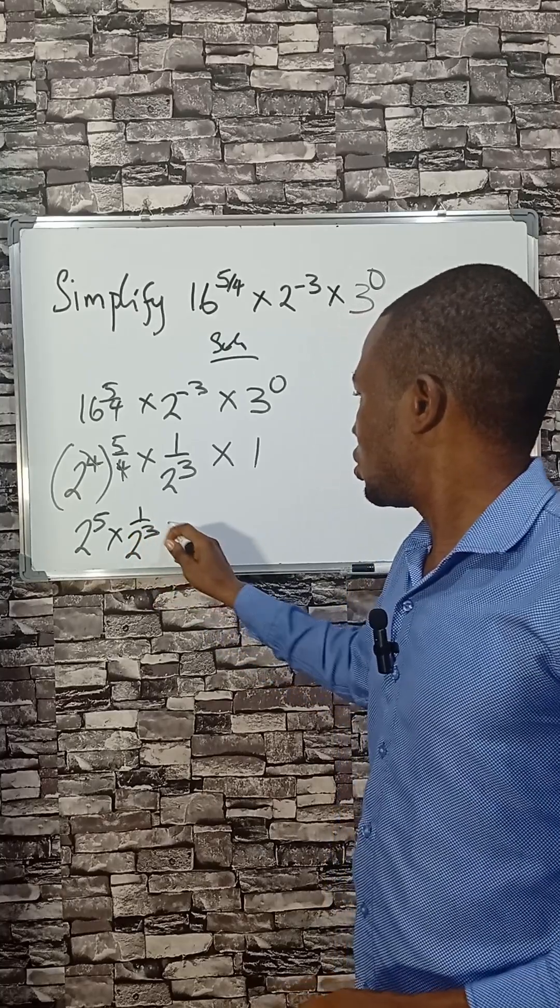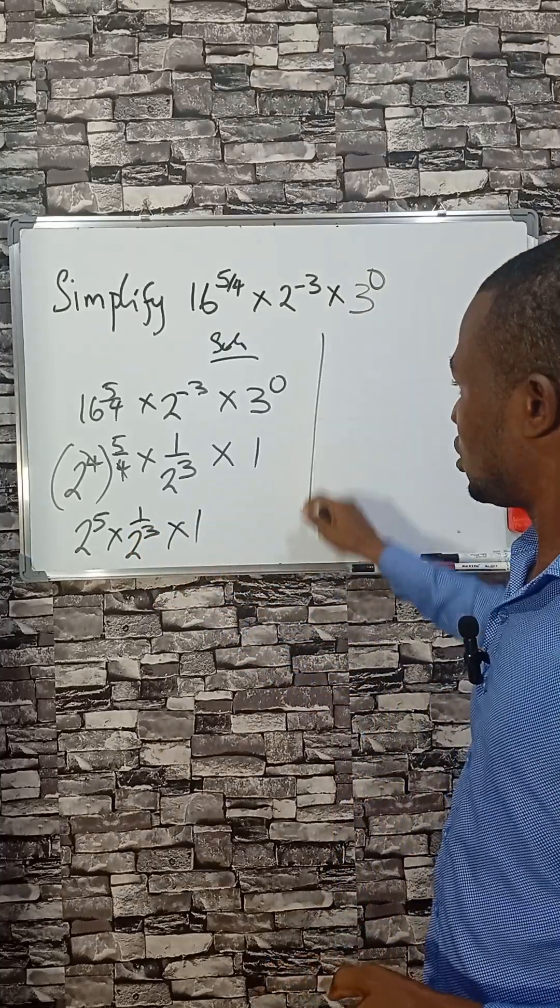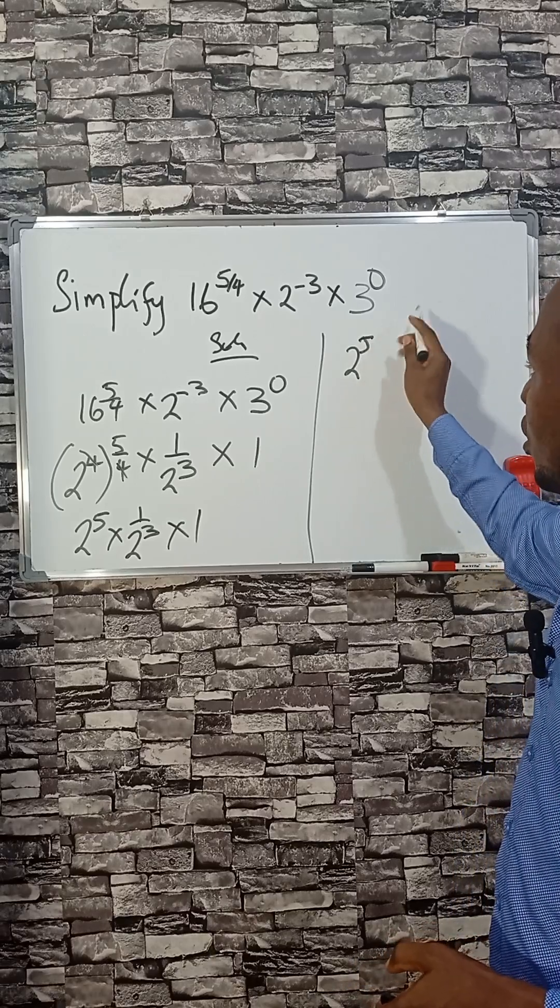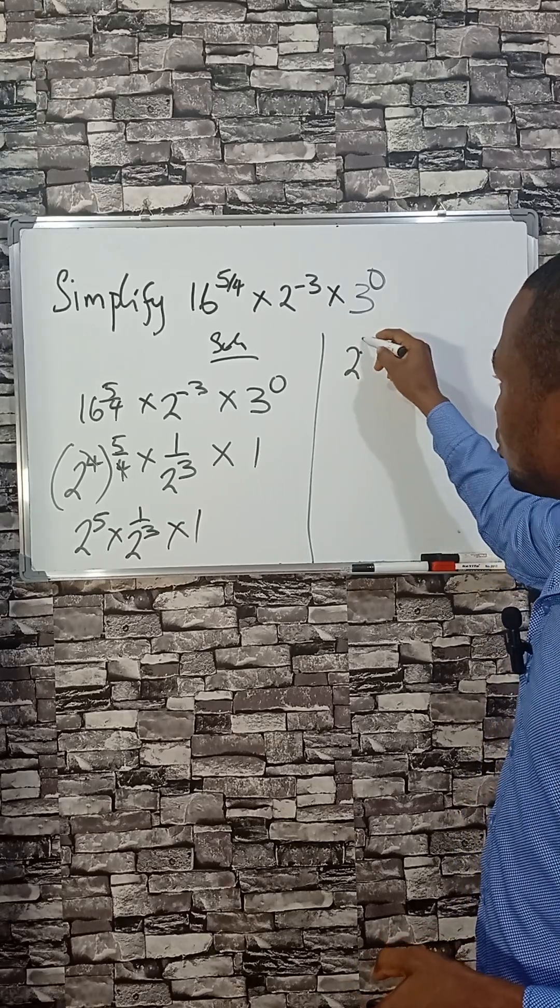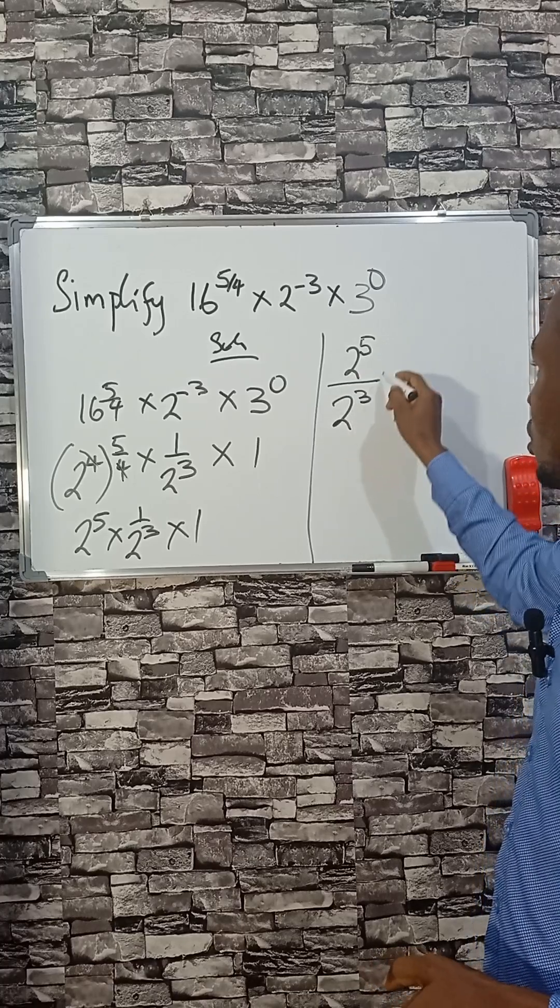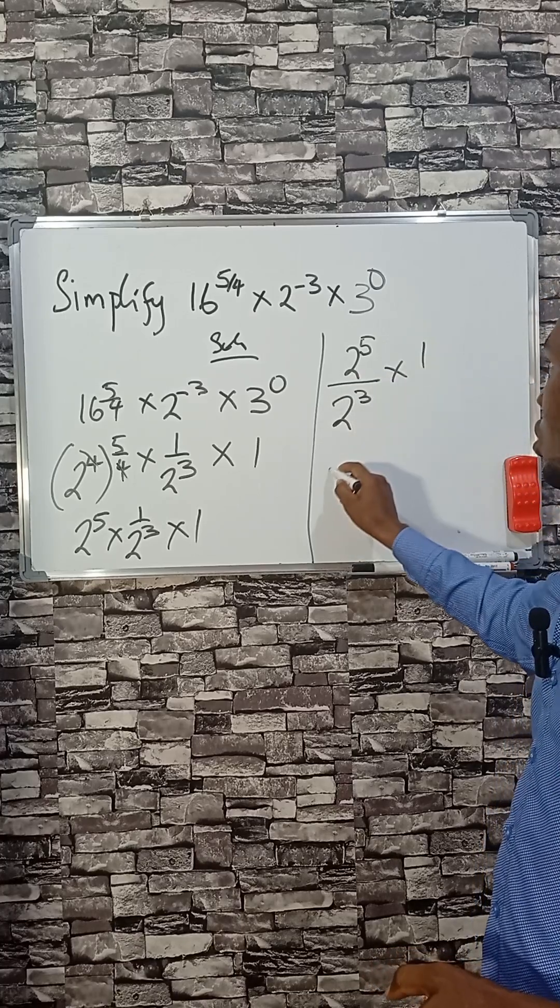Then we can write this as 2 raised to the power of 5. 2 raised to the power of 5 divided by 2 raised to the power of 3 times 1, which is 2 raised to the power of 5 minus 3.